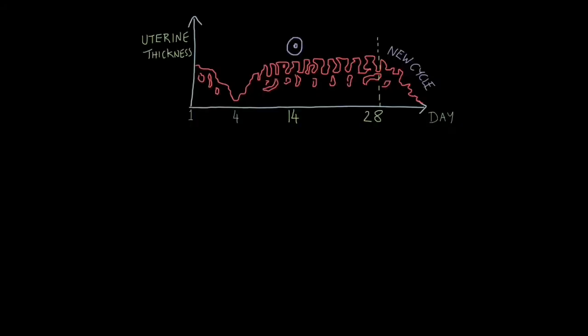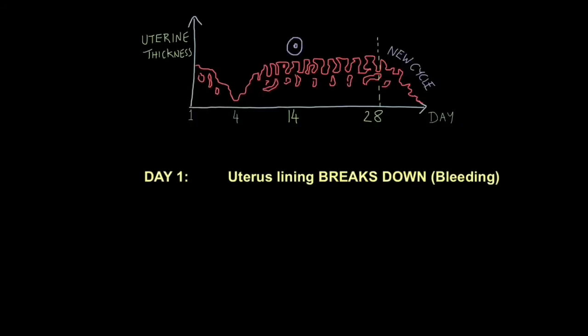There are four key stages to the menstrual cycle — it's a 28-day cycle. We start with day one, which is when the uterus lining breaks down. When this happens, we call it menstruation — that's when the uterine lining sheds, and you would commonly call it a period.